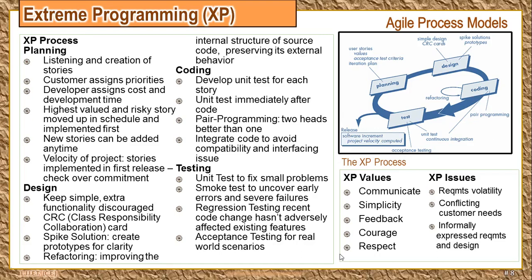Next is feedback, which can come from three places: the software developer, who identifies potential error areas; the customer, who provides use-case related details; and the software itself, which reveals errors through unit testing. Next are respect and courage, which are needed because you are designing for today and not for tomorrow — requirements may change dramatically, rework may come, and respect must be cultivated between team members.